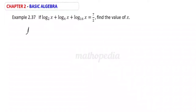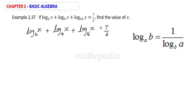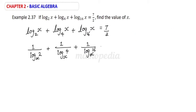It is given that log x base 2 plus log x base 4 plus log x base 16 is equal to 7 by 2. Now, applying the change of base rule, we get 1 by log 2 base x plus 1 by log 4 base x plus 1 by log 16 base x is equal to 7 by 2.